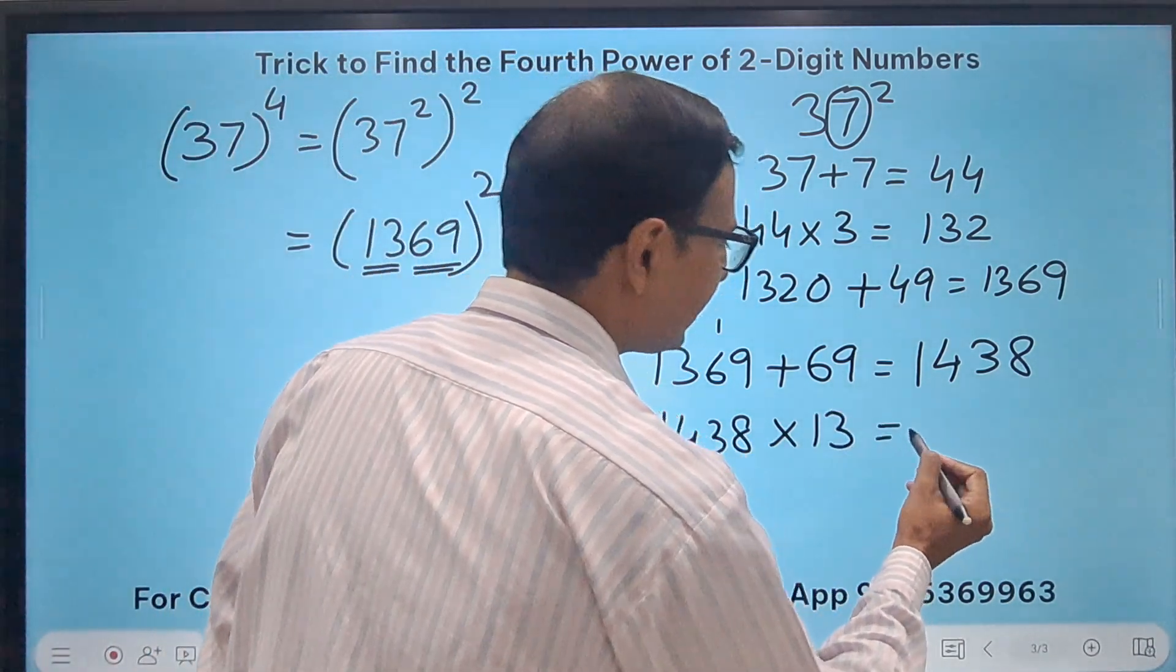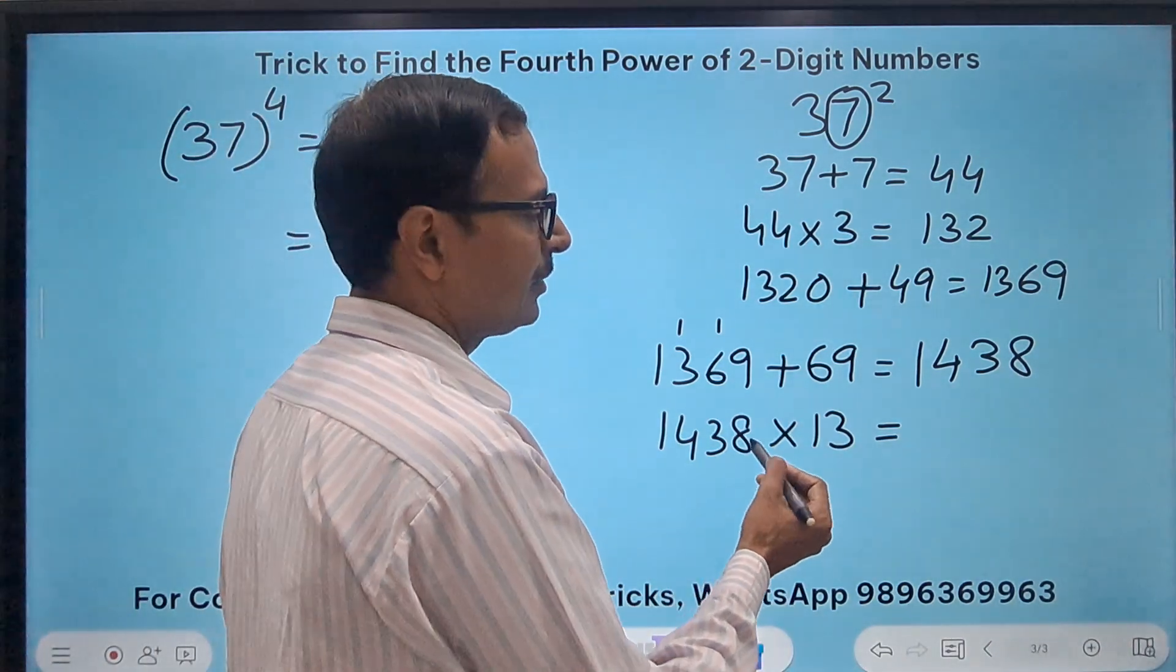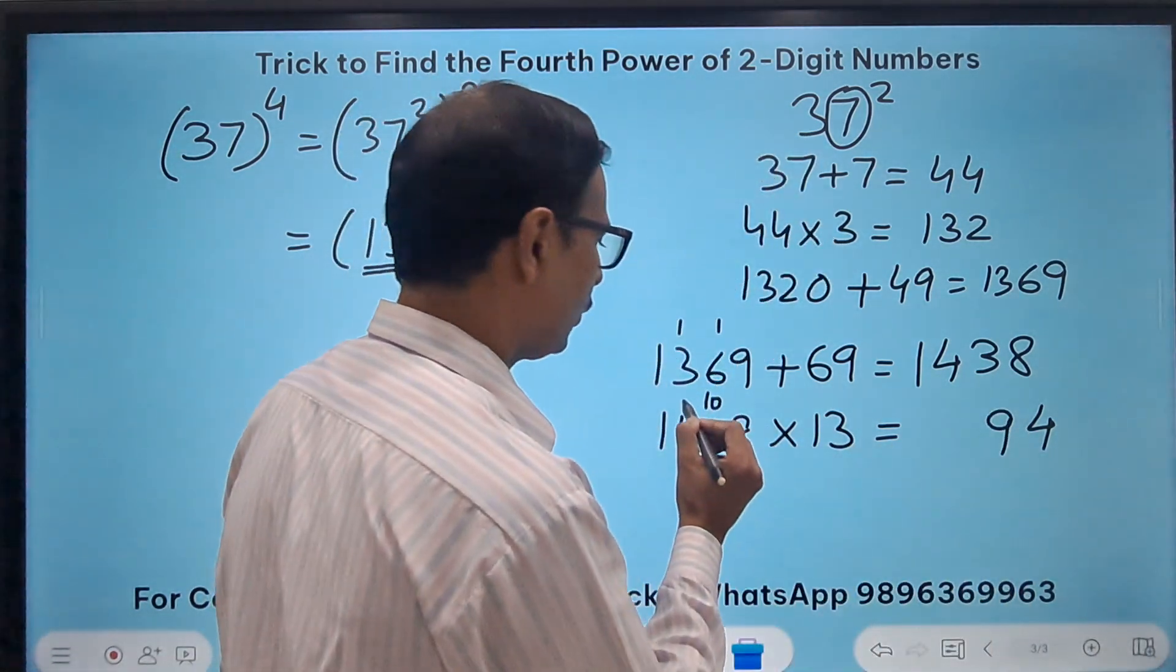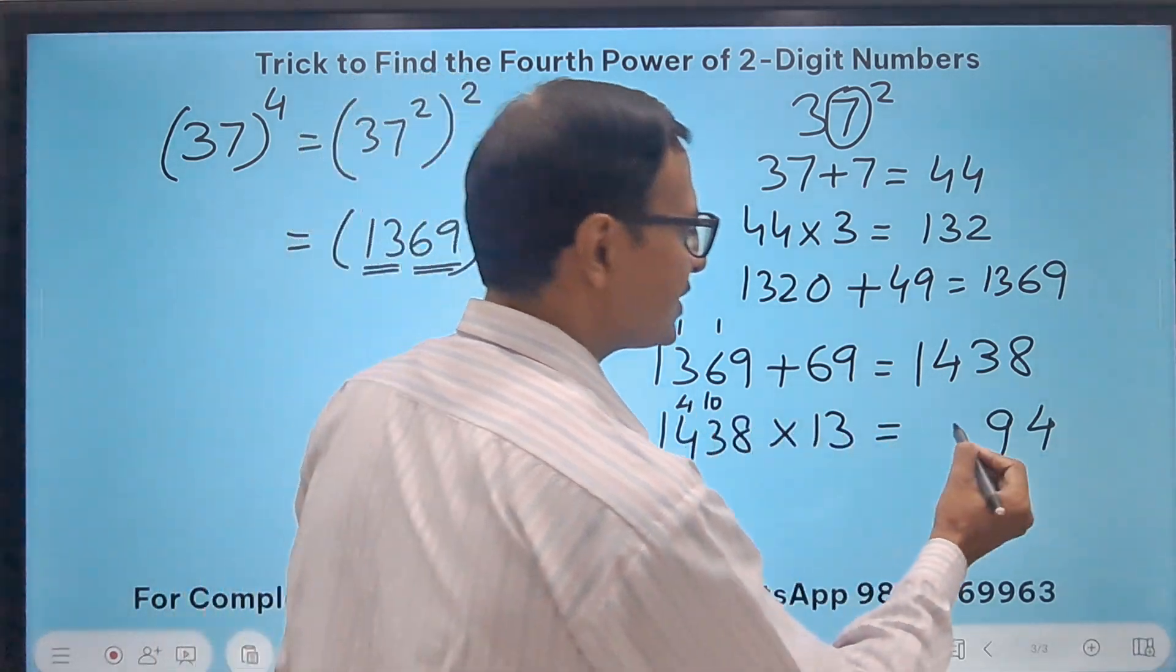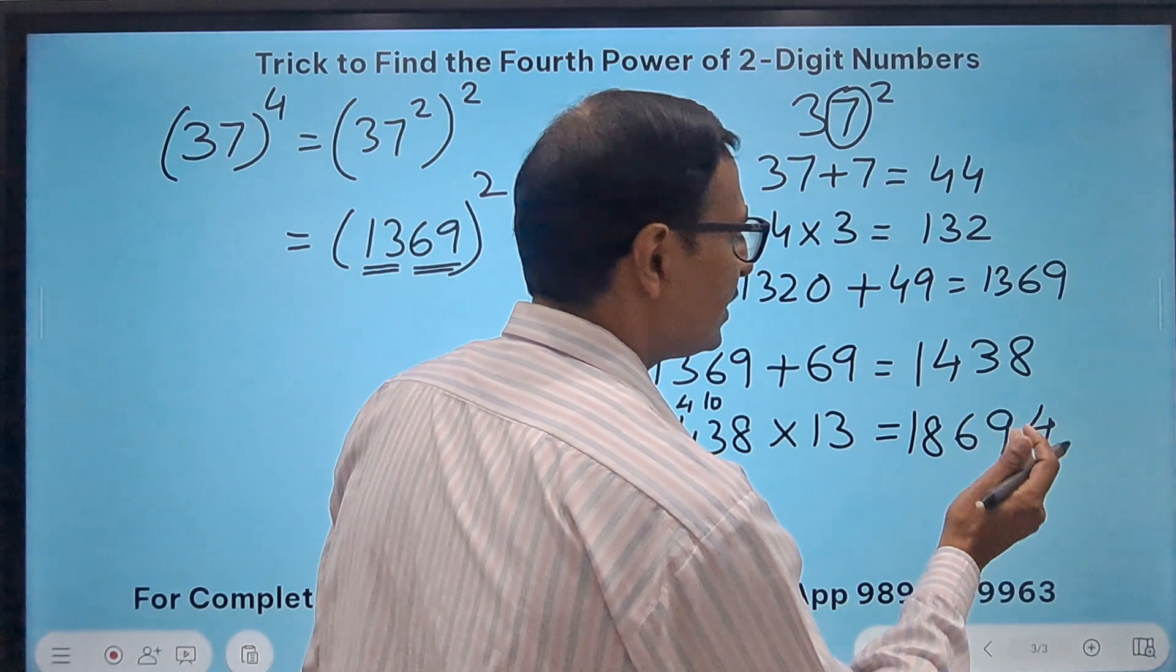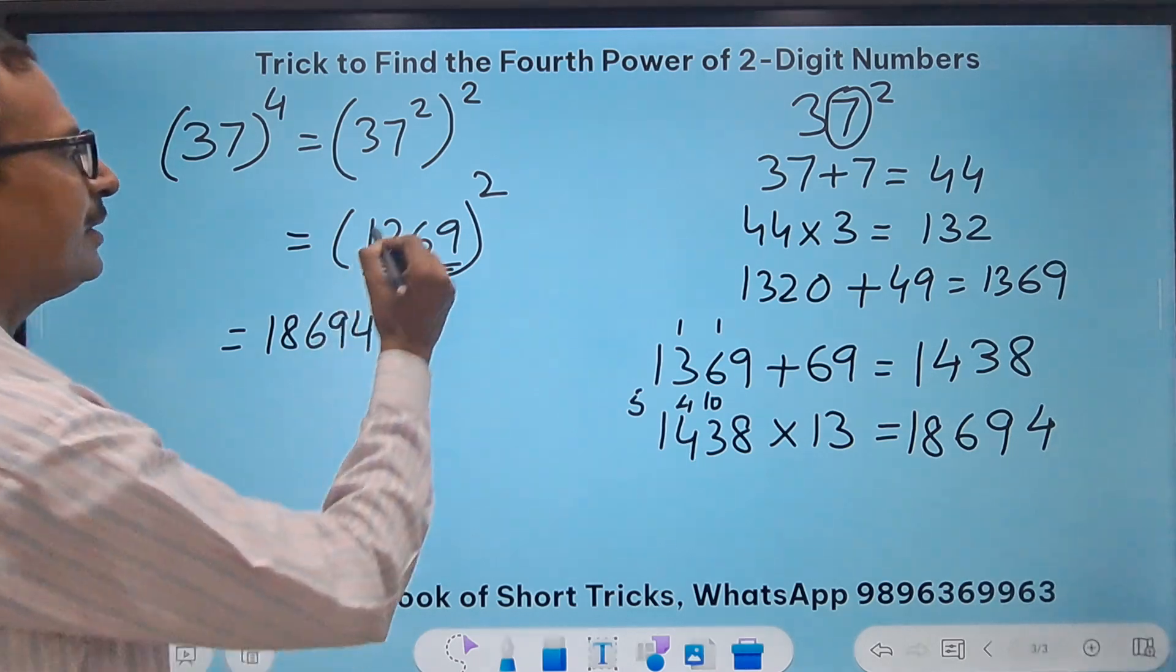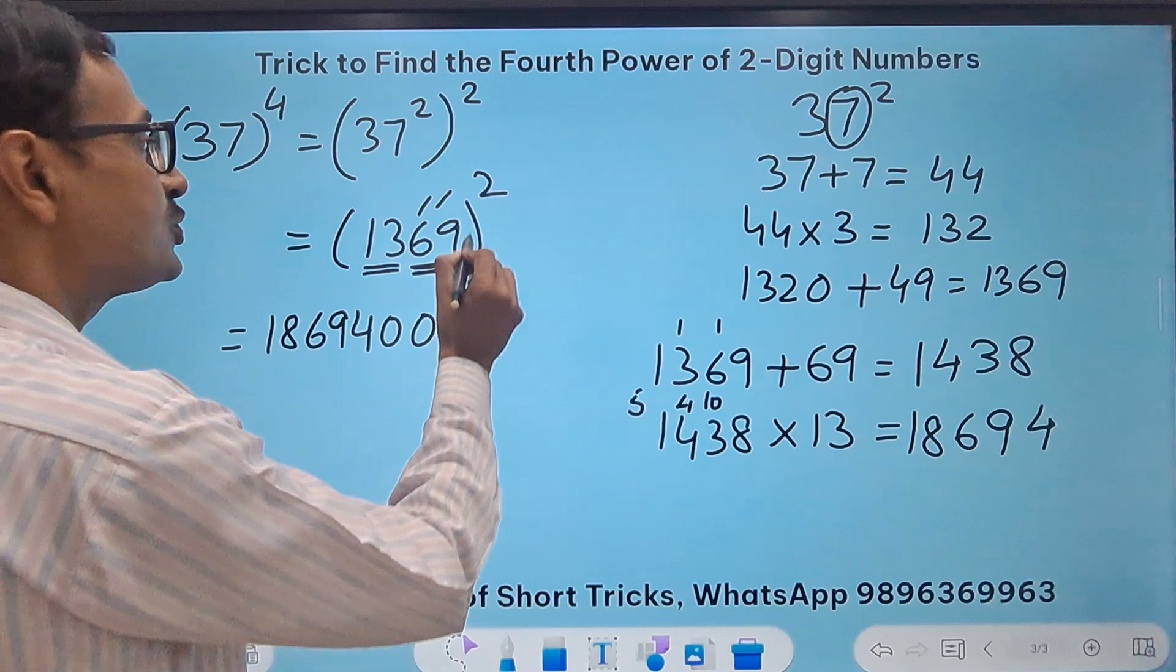So I get 1,369, and then I have to square this number. I have 13 and 69, so 1,369 plus this 69 gives me 1,438. And then 1,438 times 13. I need to know my 13 times table. 13 times 8 is 104, so 4 and carry 10. 13 times 3 is 39 plus 10 is 49. 13 times 4 is 52 plus 4 is 56. And then 13 plus 5 is 18.